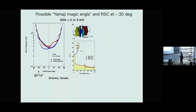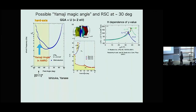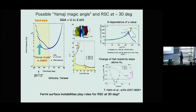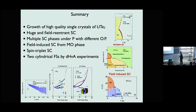I want to skip the discussion about reentrant superconductivity — it's time to stop. In summary, I showed the reentrant superconducting behavior and multiple superconducting phases, and the field-induced superconductivity. Finally, I showed the Fermi surfaces — two-dimensional Fermi surfaces detected by the dHvA experiment. Thank you for your attention.